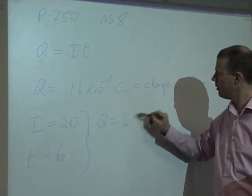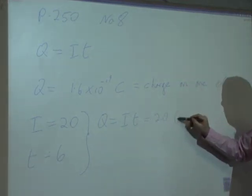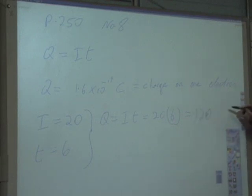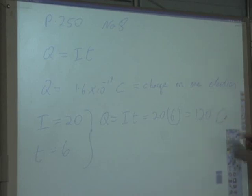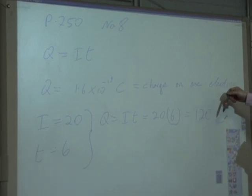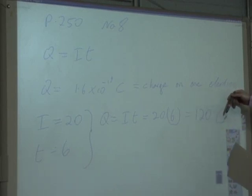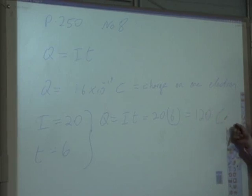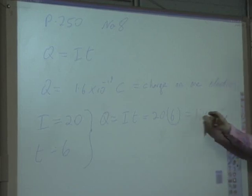Q equals I times T equals 20 by 6. Units: Coulombs — big C. So my total charge is 120 Coulombs. Let's go back to the question: if the charge on one electron is 1.6×10⁻¹⁹ Coulombs, how many electrons flow past any point in a circuit for which 20 amps flows for 6 seconds? Divide 120 Coulombs by that. That's the total charge that has flowed past the point.